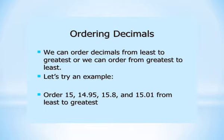Let us try an example. Order 15, 14.95, 15.8, and 15.01 from least to greatest. Least to greatest means you have to order the decimals from smallest to biggest.